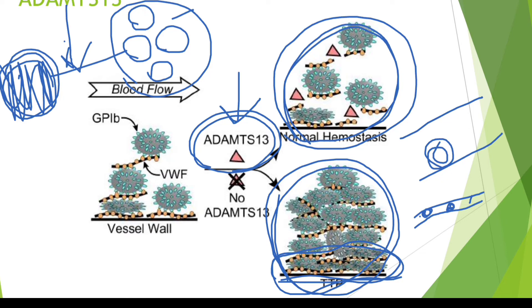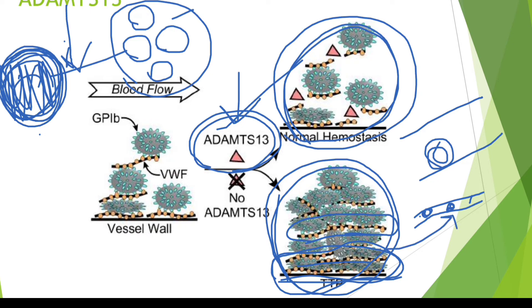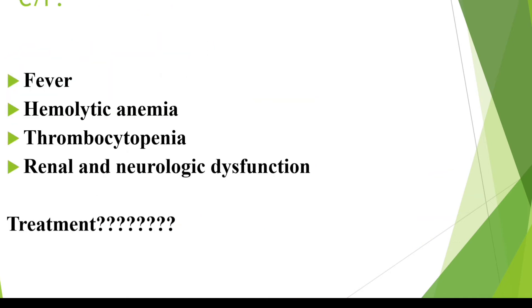This is what happens in TTP. In TTP, there is absence of ADAMTS13 enzyme, so there is no breakage of the abnormal large multimeric forms of von Willebrand factor. These large von Willebrand factors cause a large number of platelets to aggregate and form larger thrombi. These thrombi occlude the smaller vessels in vital organs. If it occludes blood vessels within the renal parenchyma, there is renal involvement leading to renal failure.